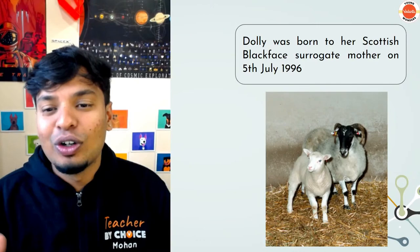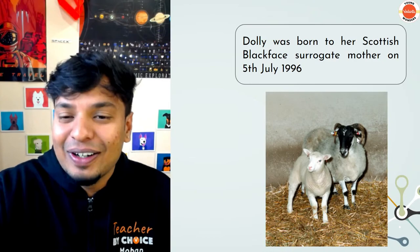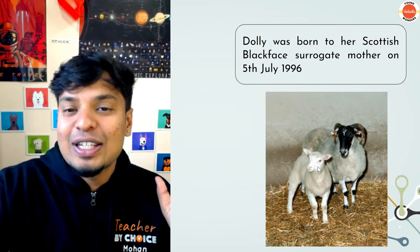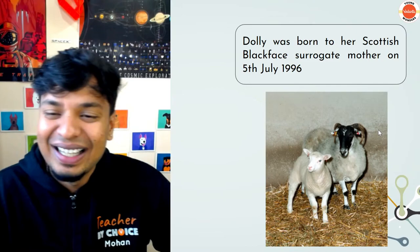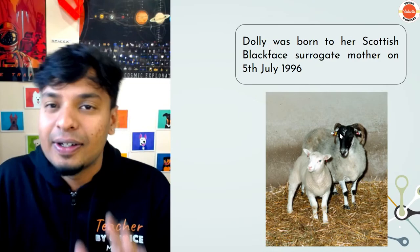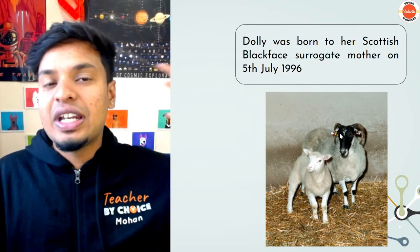Isn't that so cool? The Scottish Black Face was the surrogate mother, but Dolly had no resemblance to her at all. You can imagine the Scottish Black Face being shocked — 'I gave birth to you, where is your black face?' — because Dolly had a white face! The Scottish Black Face was just there to give birth since all genetic materials were from the Fin Dorset.